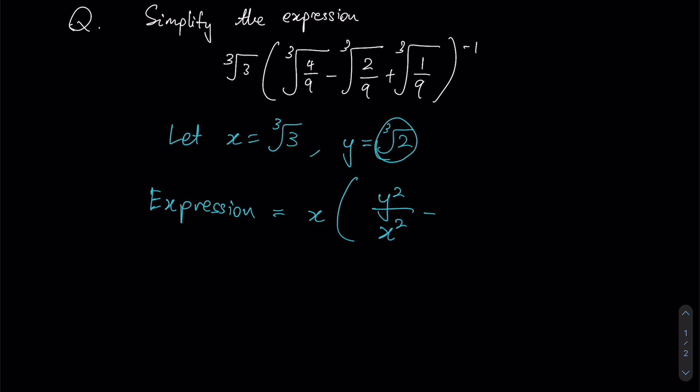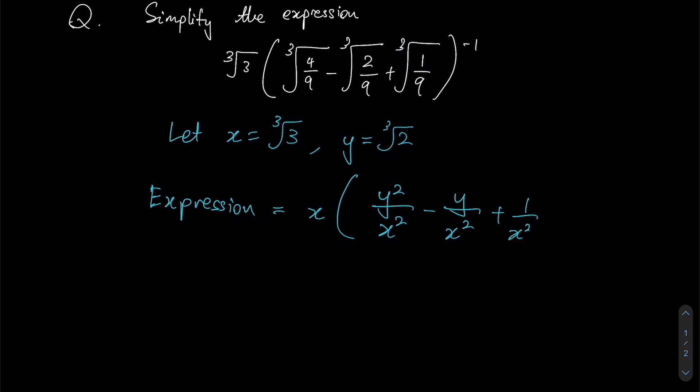Similarly, cube root of 2 will be equals to y, where my denominator is still x squared. Whereas for my last one, the cube root of 1 is just going to be 1 over x squared again.